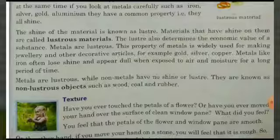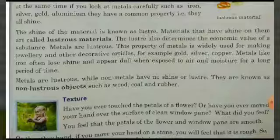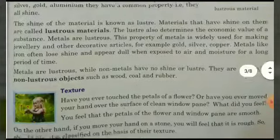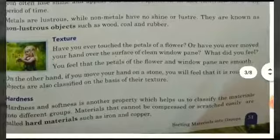Non-lustrous objects are those which do not shine. Examples of non-lustrous, non-metal materials include wood, coal, and rubber. These are examples of non-metals that are non-lustrous objects — objects which do not shine.